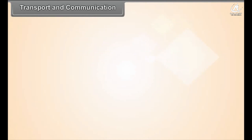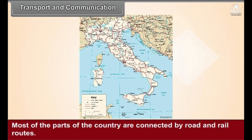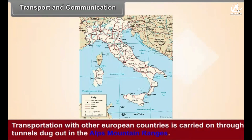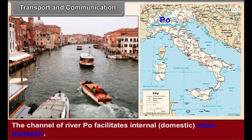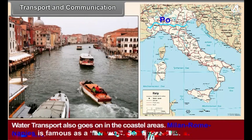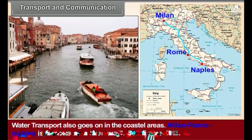Transport and Communication: Most parts of the country are connected by road and rail routes. Transportation with other European countries is carried on through tunnels dug through the Alps mountain ranges. There is an international airport near Rome. The channel of the River Po facilitates internal domestic water transport; water transport also operates in the coastal areas. Milan, Rome, and Naples are famous for their freeways.